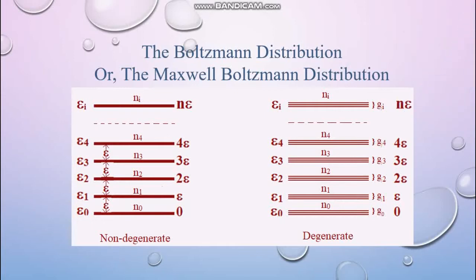First of all, instead of deriving this law, we have to just mention the law first. Later, we shall derive this. So in order to do that, we have to start from the same type of particle distribution as we did in the previous examples, where we had to distribute four particles in five energy levels from the ground state to the highest excited state, and where the total energy was limited to be four epsilon. But here it's a generalized case where N particles would be distributed in different energy levels.